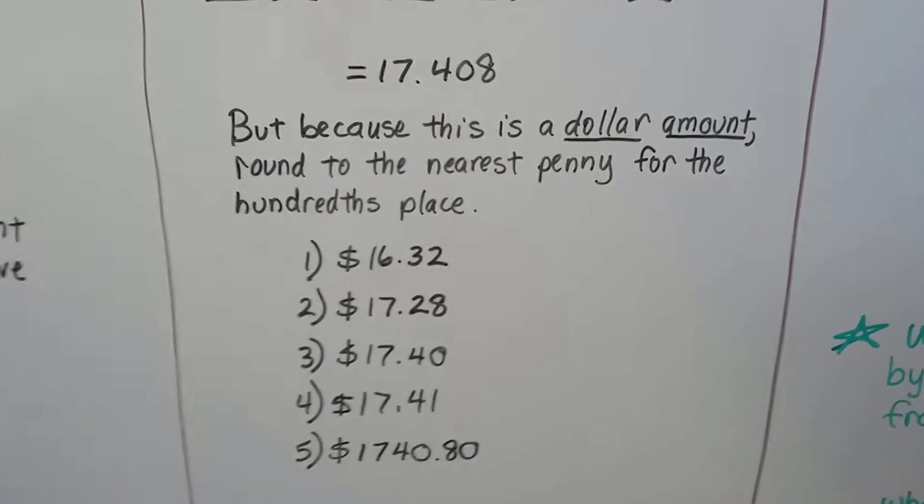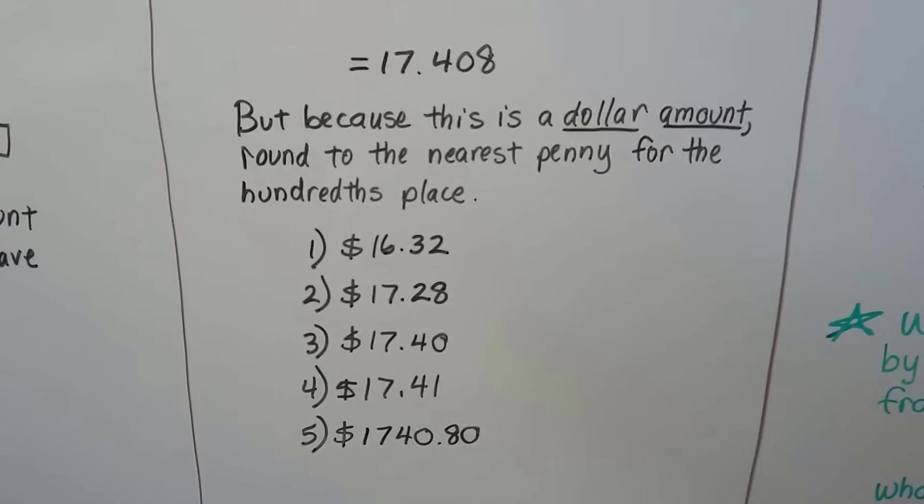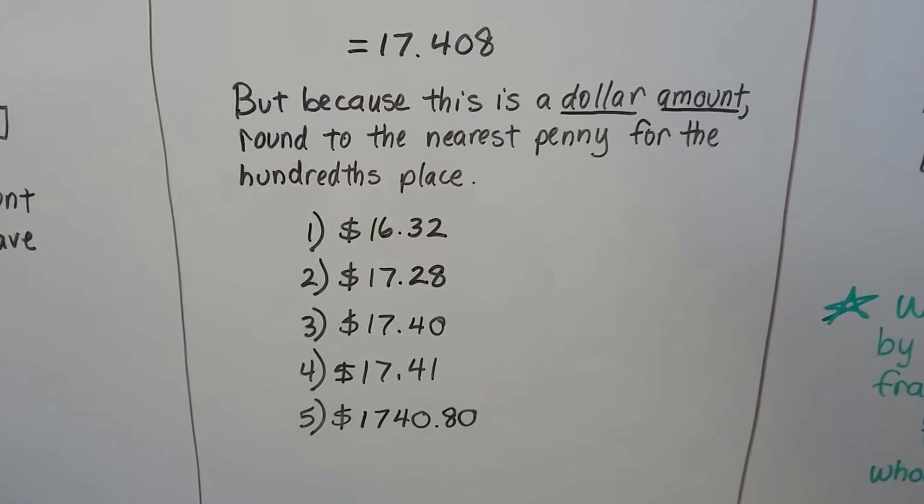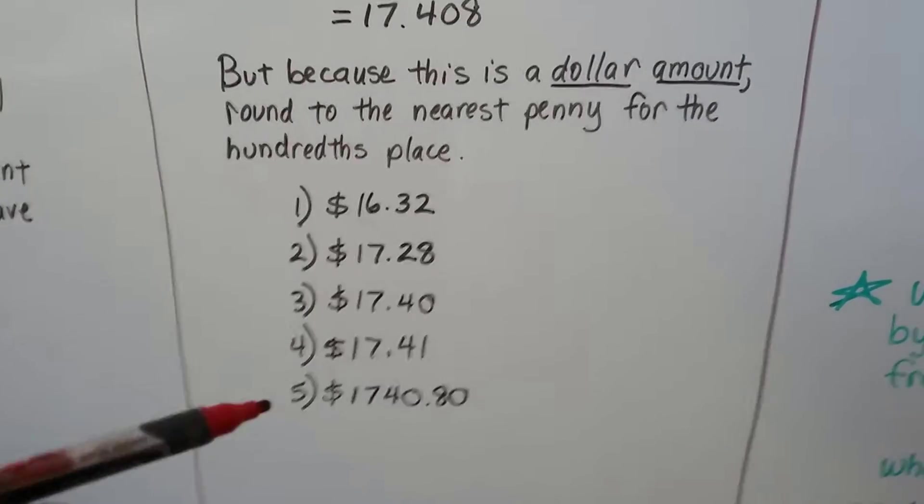If you put this as the correct answer, you're going to be wrong because it's money. Money doesn't have three digits on this side of the decimal. This eight is telling the zero to go up to a one and then it drops off. So, the correct answer would be number four, $17.41.